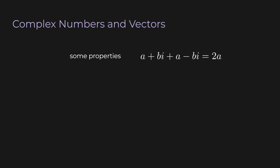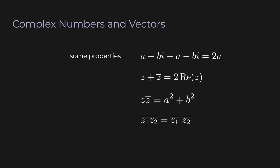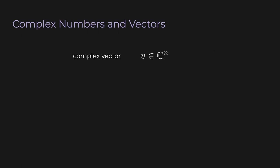Based on those definitions, here are some properties you can easily verify yourself. If you add a complex number and its conjugate together, the imaginary parts cancel and you're left with twice the real part: z plus the conjugate of z equals 2 times the real part of z. Next, the product of a complex number and its conjugate is a squared plus b squared — a real number, nothing imaginary, which should remind you of the Pythagorean theorem. Lastly, the conjugate of the product of two complex numbers is the product of the conjugates of each number.